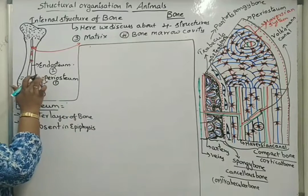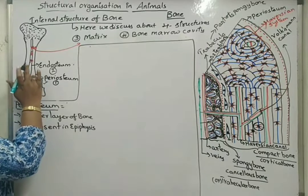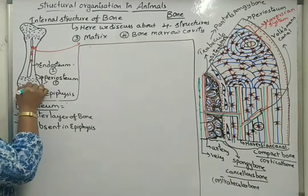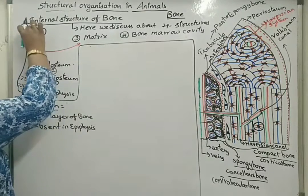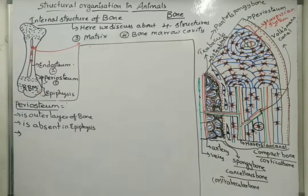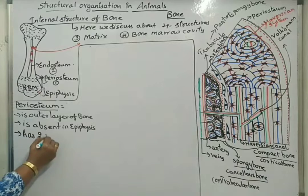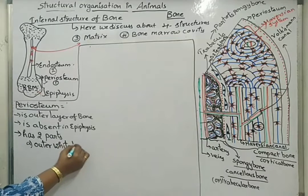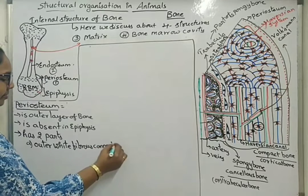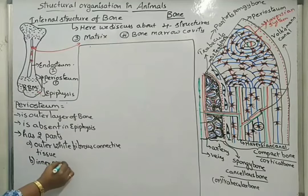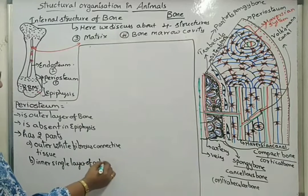So where is the epiphysis? This region up to this region is the epiphysis, where red bone marrow is present — here periosteum is absent. Periosteum has two parts: one is the outer white fibrous connective tissue, and the second is the inner single layer of osteoblasts.